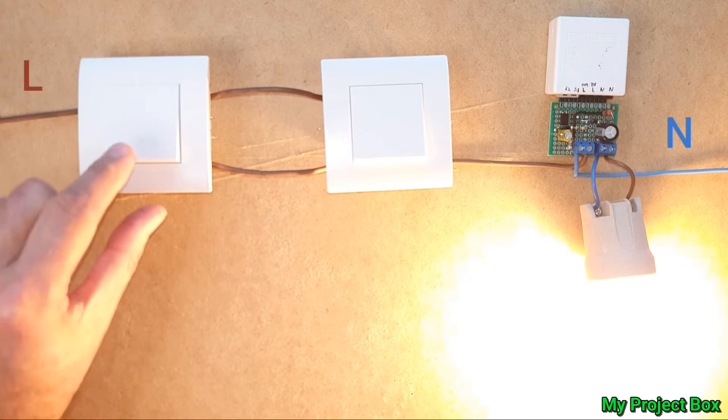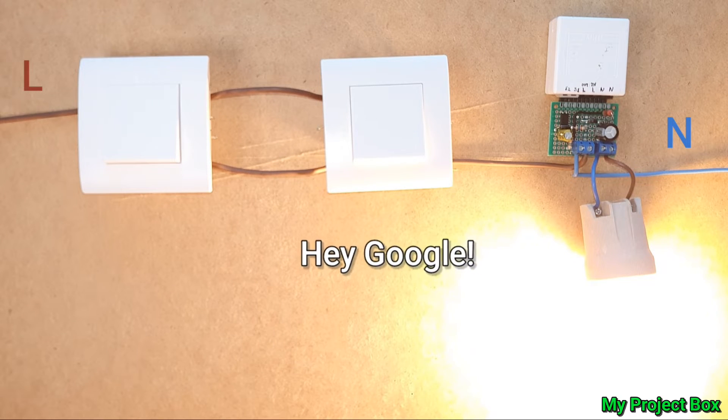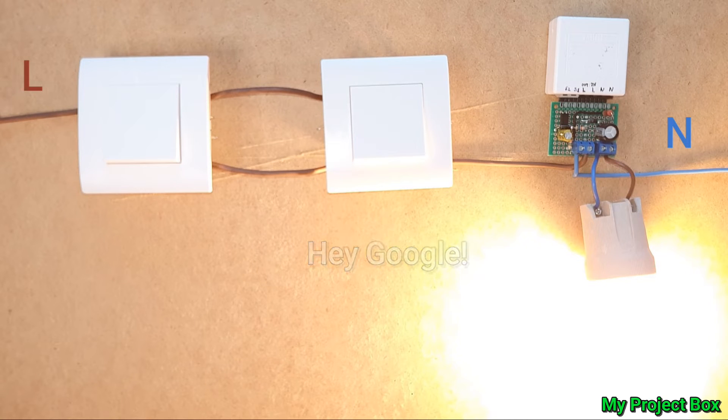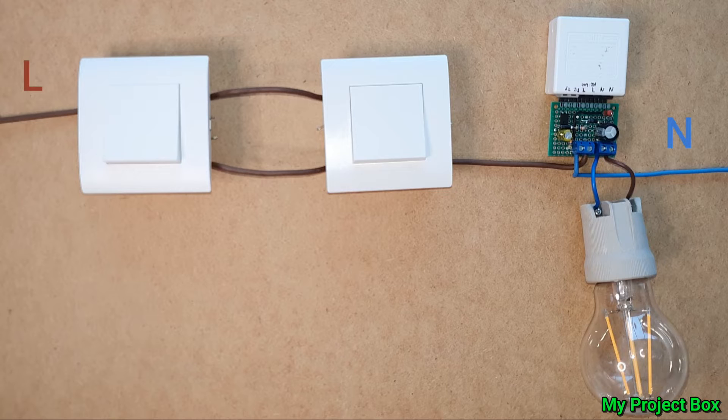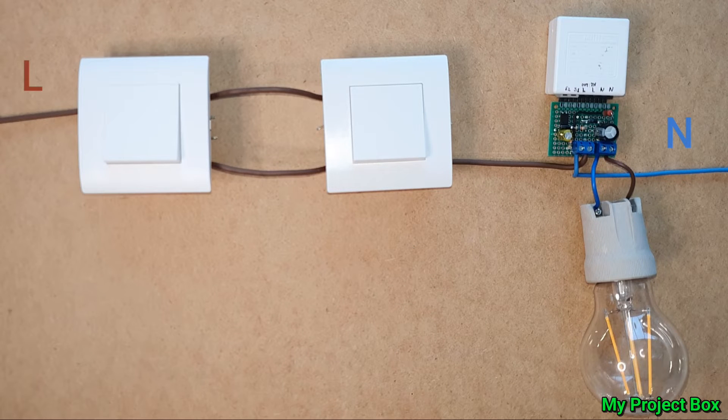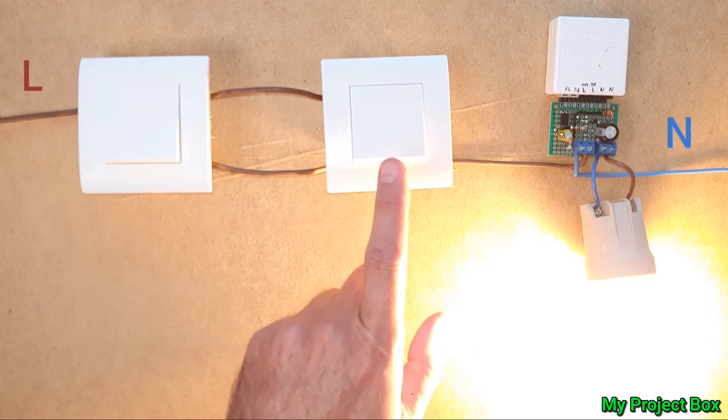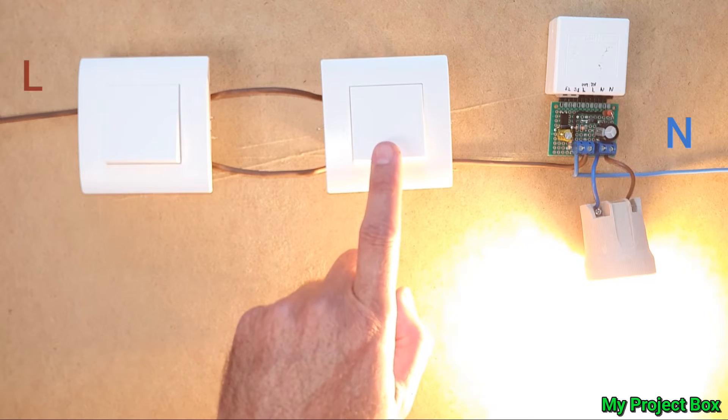Now what we can also do is we can use an assistant like Alexa or Google Home. Turn off the outside lights. Turn on the outside lights. And then we can use any of these switches to turn it back off again.